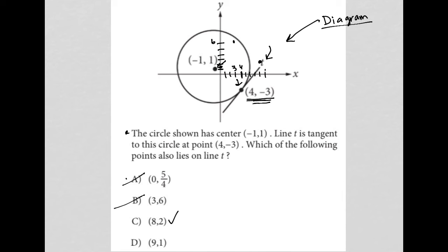And then choice D, 9, 1. So, 9, and then 1 is down here. This is why it's beneficial to actually draw this line. We know that's 1. I know this is 4, so the distance from there to there, if I double it, would take me to about here for 8. So, I'm kind of happy with my 9. But 9, 1 seems a little too low in the Y value to actually be on this line. So, I'm going to say choice C is the best answer. All I really used was my diagram — that's the value of having the diagram. 8, 2 looks like the best bet for being on line T. So, choice C is the correct answer.